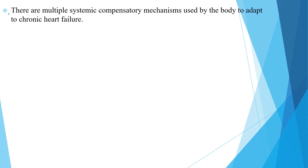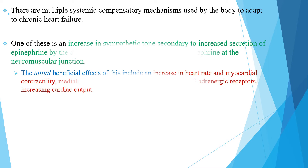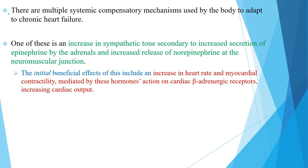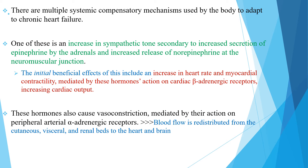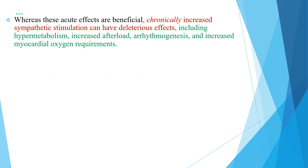There are multiple systemic compensatory mechanisms used by the body to adapt to chronic heart failure. One is an increase in sympathetic tone secondary to increased secretion of epinephrine by the adrenals and increased release of norepinephrine at neuromuscular junctions. The initial beneficial effects include an increase in heart rate and myocardial contractility mediated by these hormones acting on cardiac beta-adrenergic receptors, increasing cardiac output. These hormones also cause vasoconstriction mediated by peripheral arterial alpha-adrenergic receptors, redistributing blood flow from cutaneous, visceral, and renal beds to the heart and brain. However, chronically increased sympathetic stimulation can have deleterious effects including hypermetabolism, increased afterload, arrhythmogenesis, and increased myocardial oxygen requirement.